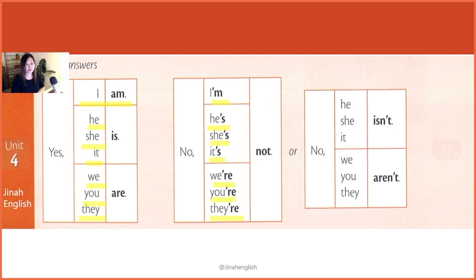Or you can make a different contraction: No, he isn't. No, she isn't. No, it isn't. No, we aren't. No, you aren't. No, they aren't.